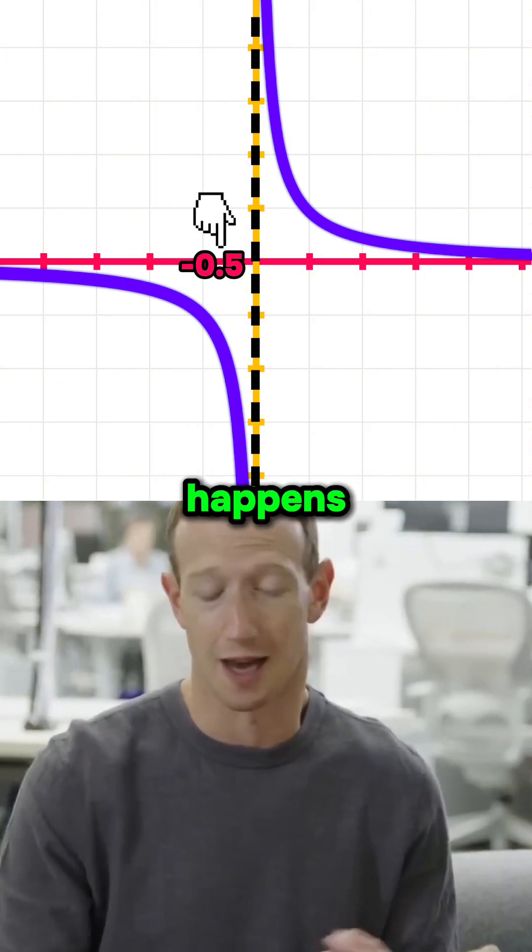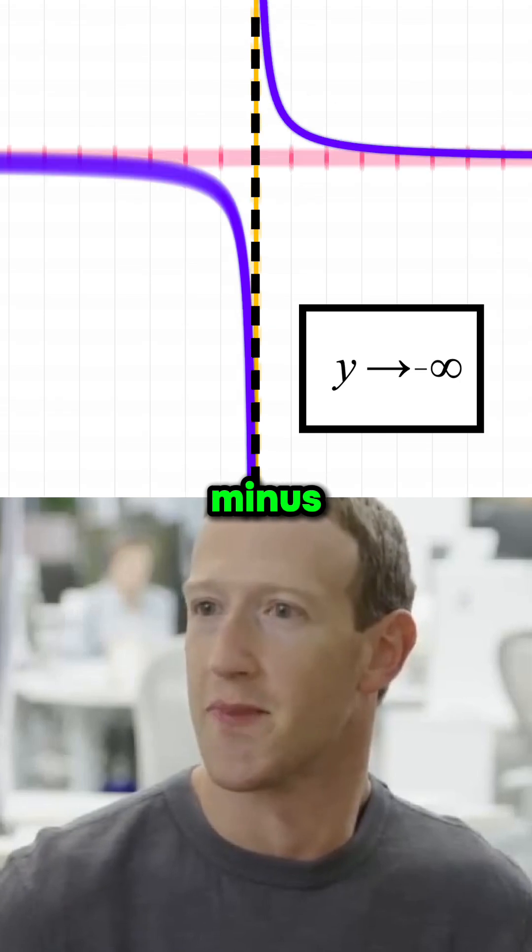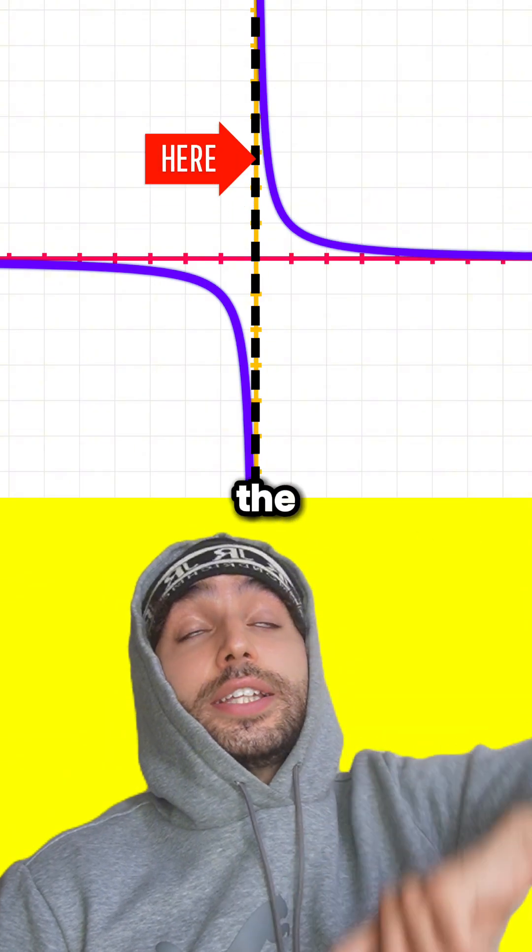And check it out, the same thing happens on the other side too, but because x is negative, the function shoots down towards minus infinity. So it's this dotted line, the asymptote.